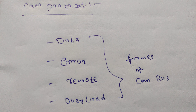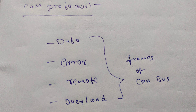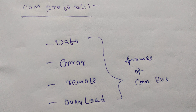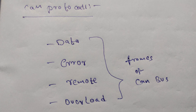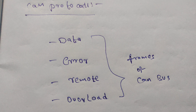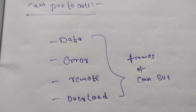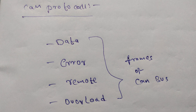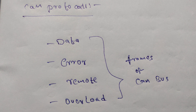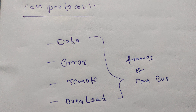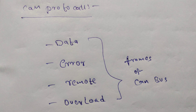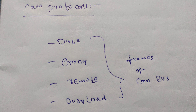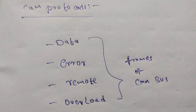Remote frame is the frame that requests a resend of the data frame — the receiver is requesting resending of the data frame. The data frame and remote frame look alike, but there is one difference: the RTR bit.